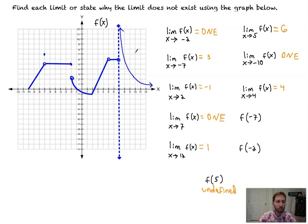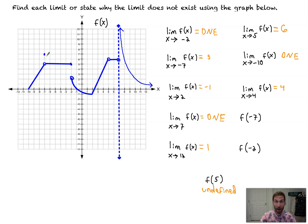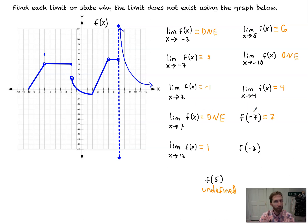f(-7): we don't approach — we go right to it. The limit was 5 because that's what we approached from both sides, but now we're asking what is the y value at x = -7. That value is 7. Notice there's no limit notation at all — an important distinction between approaching versus evaluating directly.